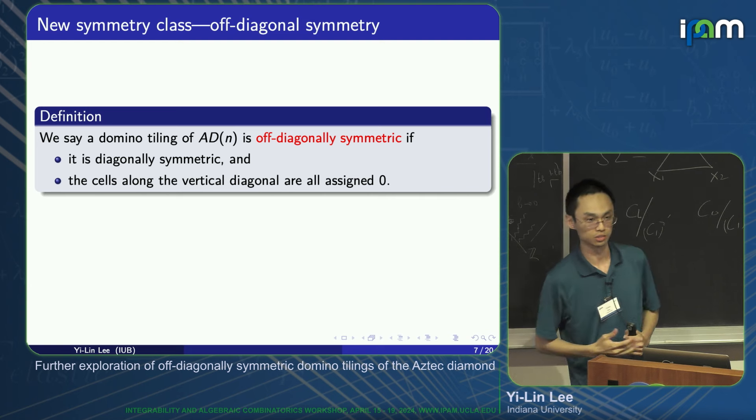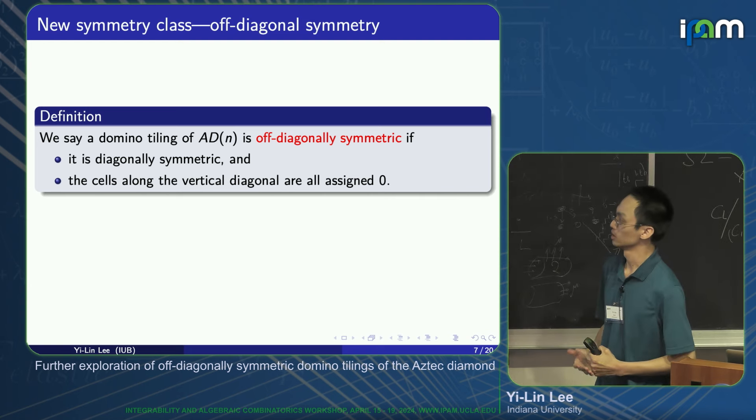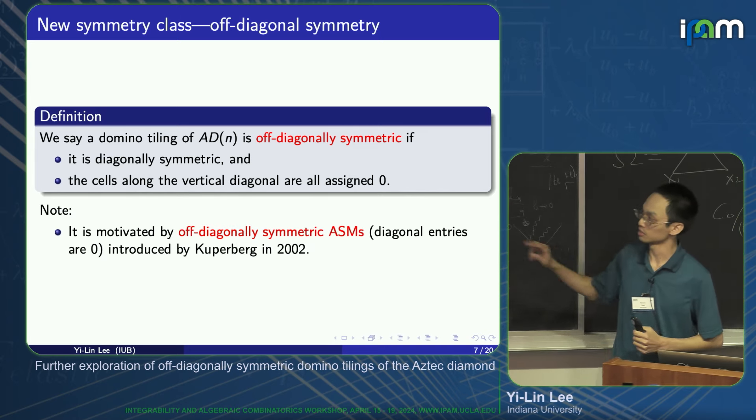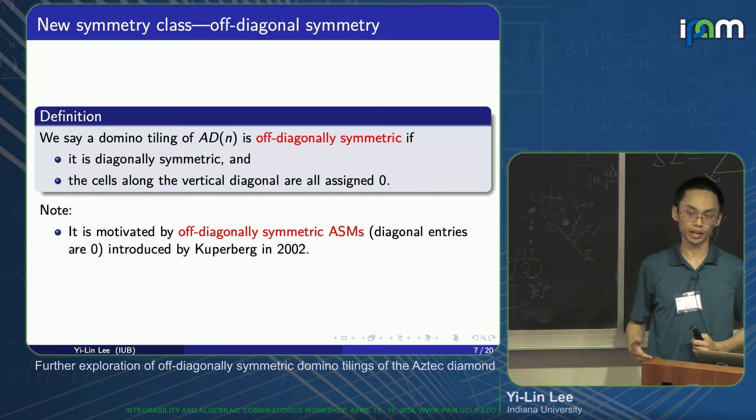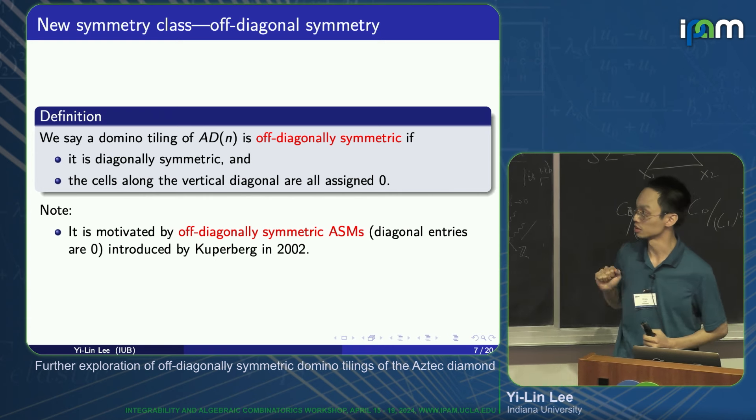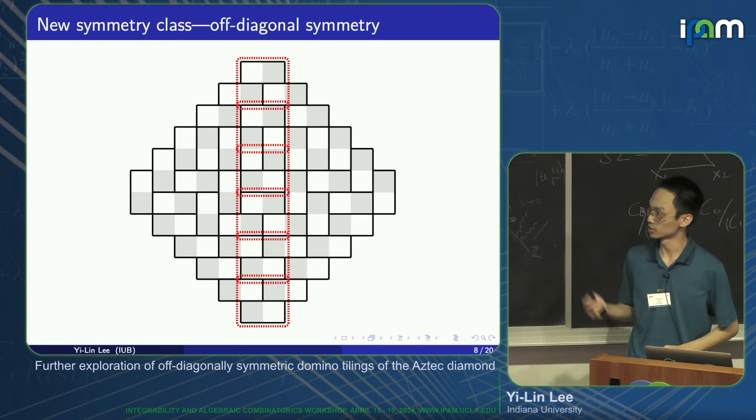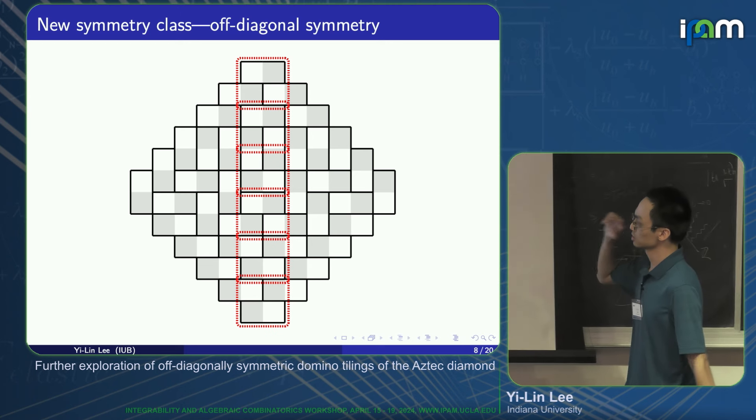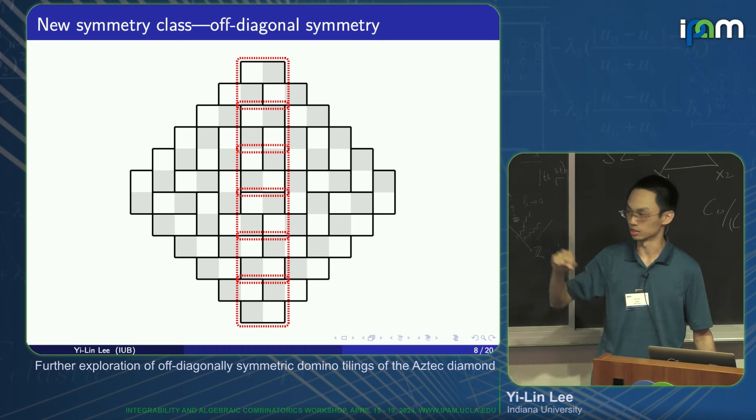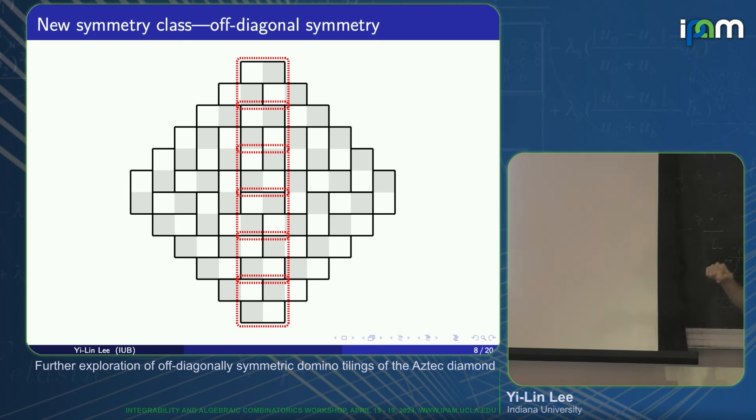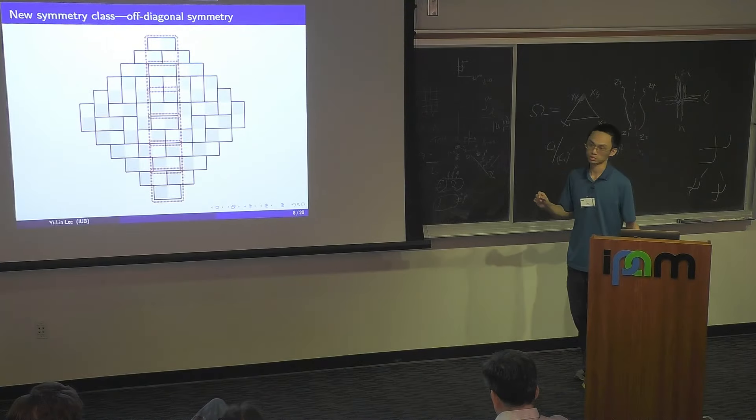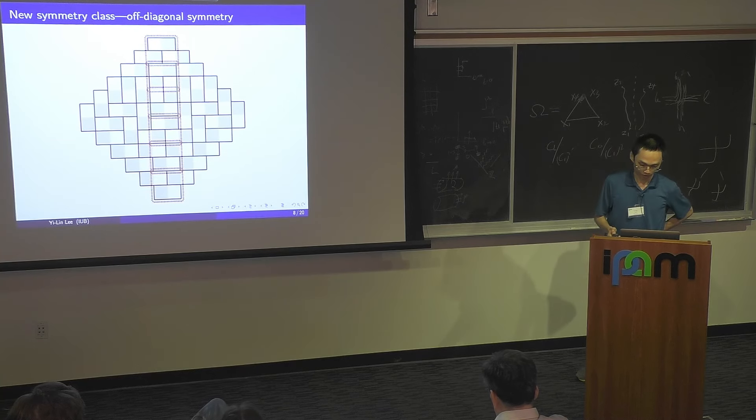We say domino tiling is off-diagonally symmetric if it is diagonally symmetric plus the extra condition that the cells along the vertical diagonal are all assigned zero. The second condition looks weird, but the motivation came from off-diagonally symmetric alternating sign matrices, meaning now the diagonal entries of the alternating sign matrices are zero, which were introduced by Kuperberg. So this is an example. This is Aztec diamond of order six. You can check that the dominoes are symmetric with respect to the vertical diagonal. And there are six cells on the vertical diagonal marked in the red dotted box. You can check that in each cell, it contains exactly one complete domino, so they are all assigned zero.